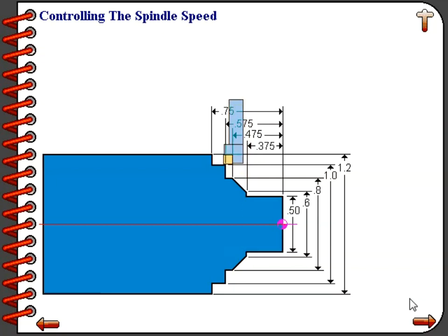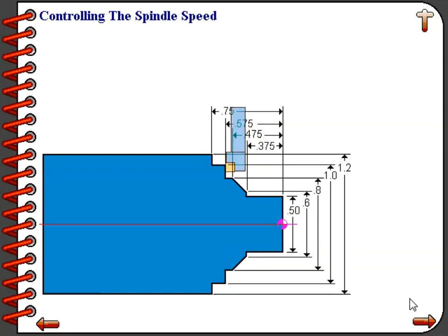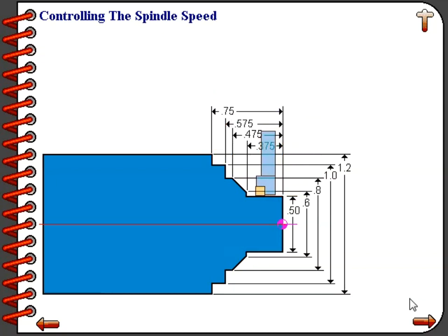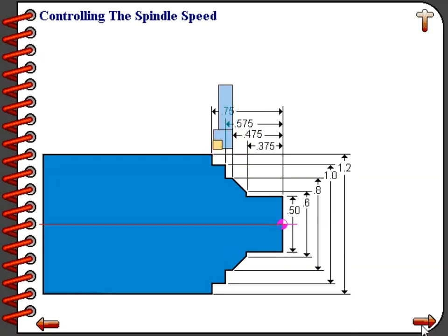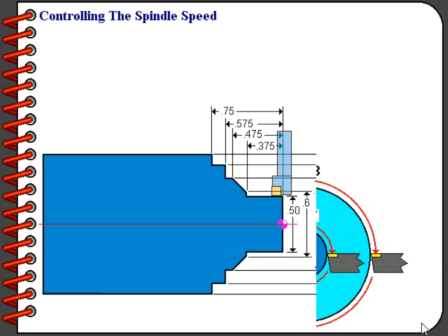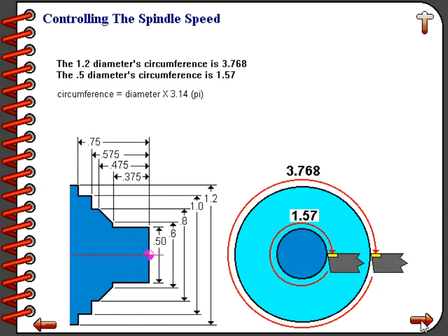As you can watch during this animation, the tool starts out cutting at a half-inch diameter, but by the time it's toward the end of the workpiece and at the end of the finished path it is cutting a 1.2-inch diameter. At the 1.2-inch diameter, our circumference of the workpiece is much greater than it is at the half-inch diameter. Constant surface speed deals with the circumference of the workpiece, which is considered the surface area of the part.